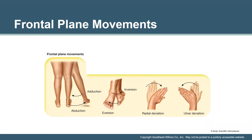When talking specifically about the feet, the joints can do inversion and eversion. Our point of reference is the plantar surface. In eversion, we swing the bottom of the foot outward. When we invert, we bring the plantar surface of the foot to face midline. In the hand, we can take it through radial deviation — toward the radius — or ulnar deviation, toward the pinky side.